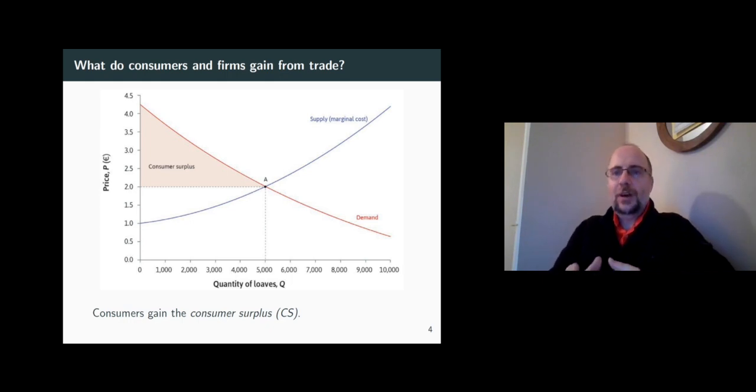So for example, imagine you value a house you have viewed at say 250,000 pounds, but you end up paying just 200,000 for it. The difference is your consumer surplus.